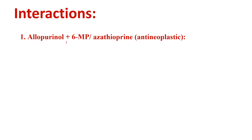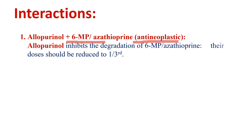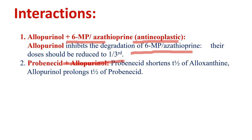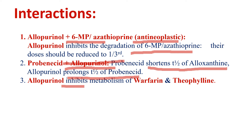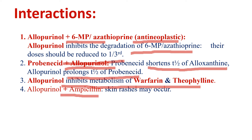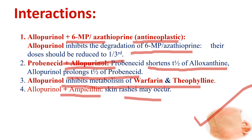Regarding drug interactions: allopurinol when given with 6-mercaptopurine or azathioprine — used as antineoplastic or immunosuppressant drugs — inhibits their degradation, so their dose should be reduced to one third. Probenecid when given with allopurinol shortens the half-life of alloxanthine and allopurinol, while allopurinol prolongs the half-life of probenecid. Allopurinol also inhibits the metabolism of warfarin and theophylline. When given with ampicillin, it results in skin rashes.